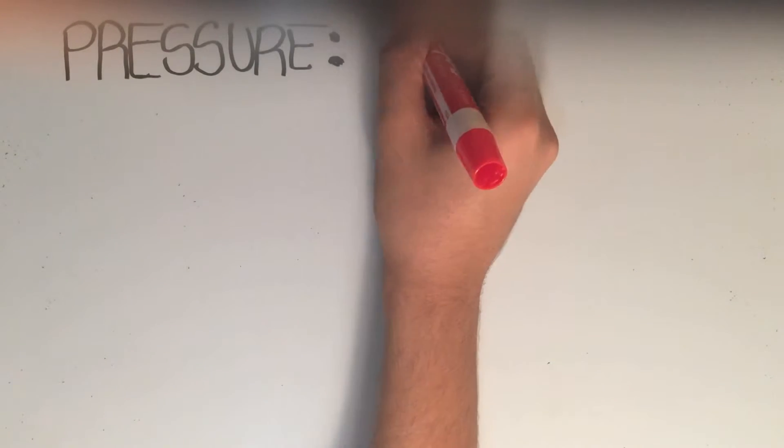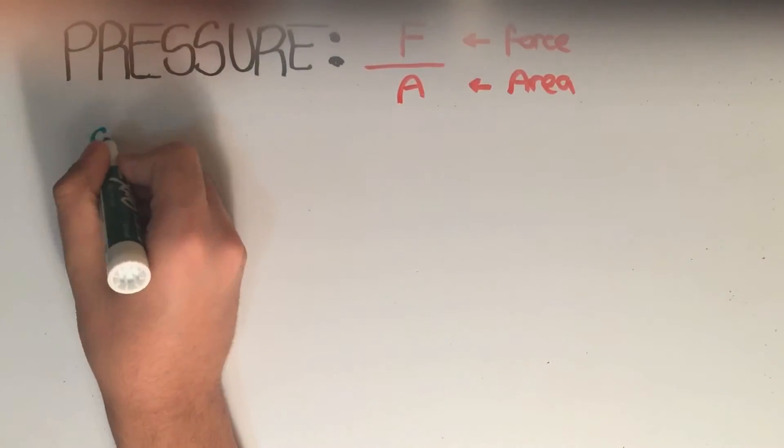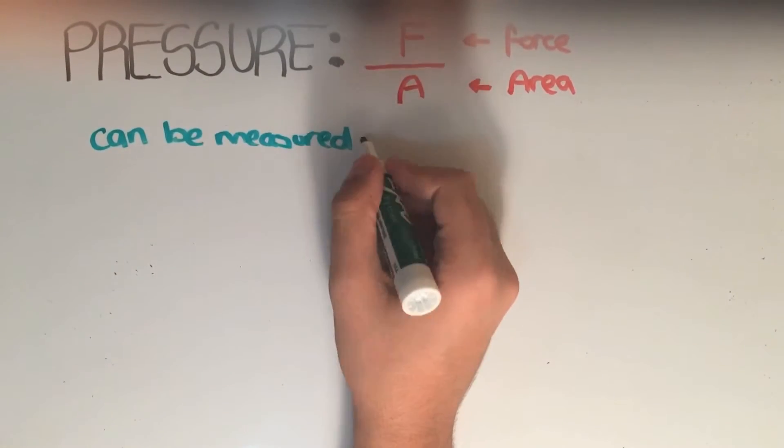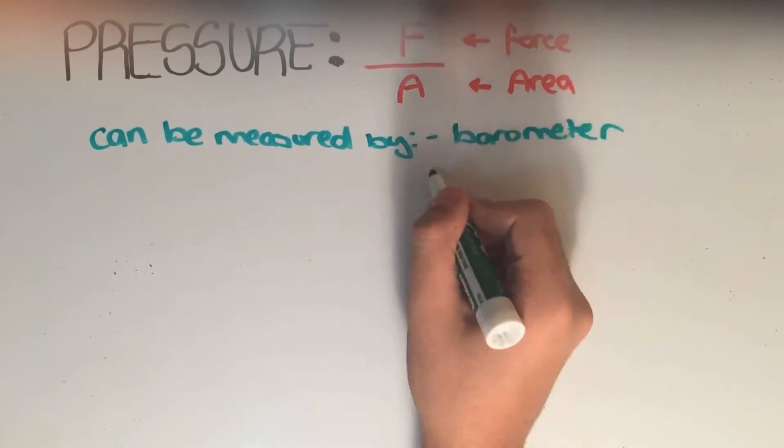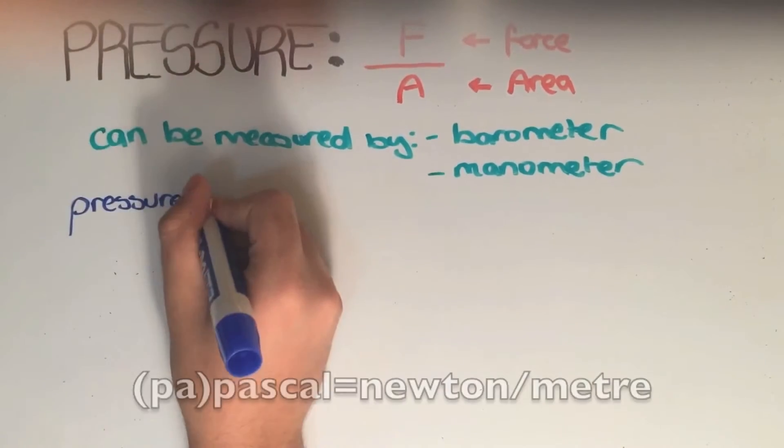The next quantity we're going to be looking at is pressure. Pressure is the ratio between the force applied on a surface and its surface area. You can measure pressure using two devices: the first one is the barometer and the second one is the manometer. Pressure has many units. The main one is the pascal.